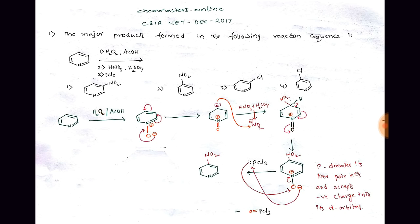Due to the attack of the lone pair of electrons on nitrogen, nitrogen acquires a positive charge and oxygen acquires a negative charge. So whenever we add H2O2 and acetic acid to pyridine, the nitrogen gets oxygenated — oxygen attaches to nitrogen, with nitrogen getting positive charge and oxygen getting negative charge.